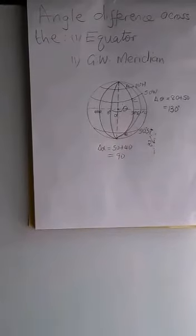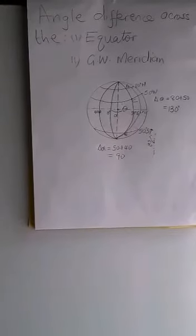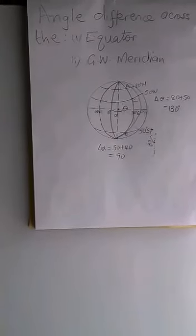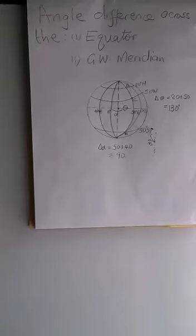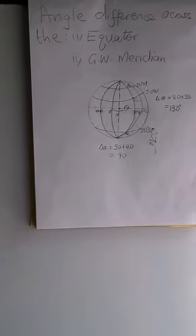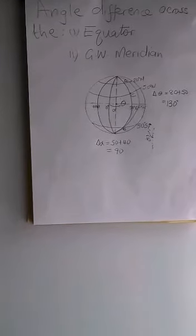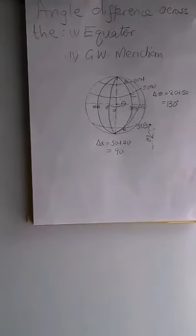So when points lie within the same hemisphere, the arc difference subtended by an arc length is the subtraction. If points lie across the equator or lie in opposite hemispheres, then the arc difference is addition.